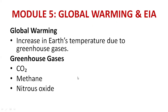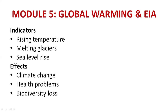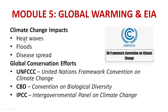Module 5: Global Warming and EIA. Global warming is the increase in Earth's temperature due to the greenhouse effect. Greenhouse gases include carbon dioxide, methane, and nitrous oxide. Indicators of global warming: rising temperatures, melting glaciers (especially in the Arctic), and rising sea levels. Effects include climate change, health problems, and biodiversity loss. Climate change impacts include heat waves, floods, and disease spread.